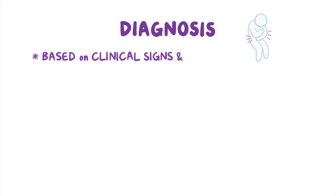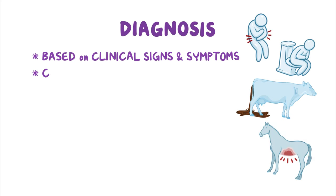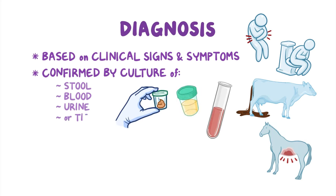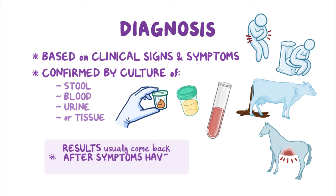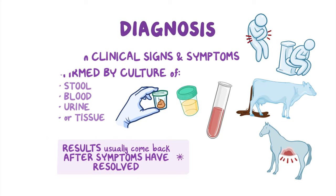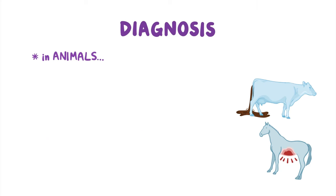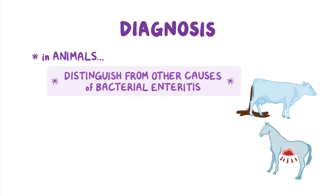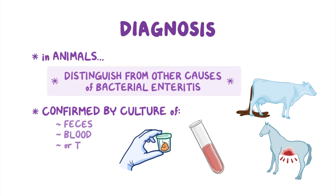Diagnosis of salmonellosis is based primarily on clinical signs and symptoms. It can be confirmed by culture of stool, blood, urine, or tissue. However, test results usually come back after symptoms have resolved, and therefore diagnosis is usually based on the symptoms. In animals, diagnosis can often be suspected based on symptoms, but salmonellosis will need to be distinguished from other causes of bacterial enteritis. As in people, diagnosis can be confirmed by culture of feces, blood, or body tissues.